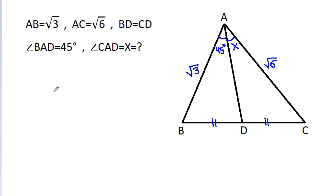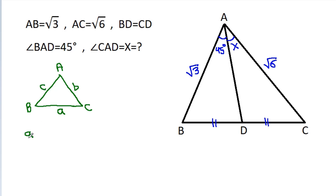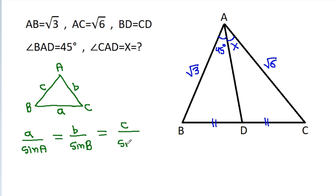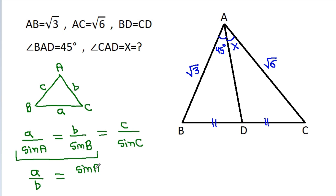In any triangle with vertices A, B, C and corresponding side lengths a, b, c, the sine rule states that a/sin A = b/sin B = c/sin C. From these two equations, we can say that a/b is equal to sin A / sin B.